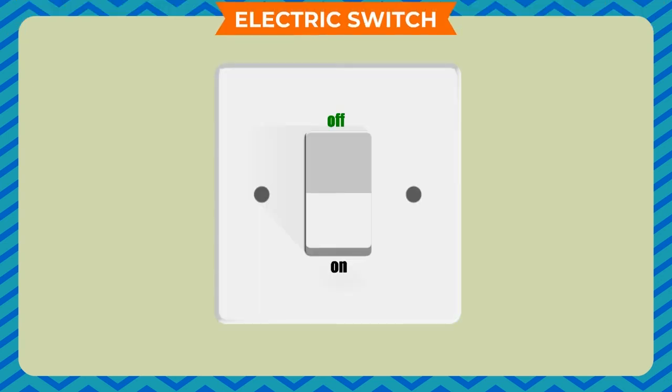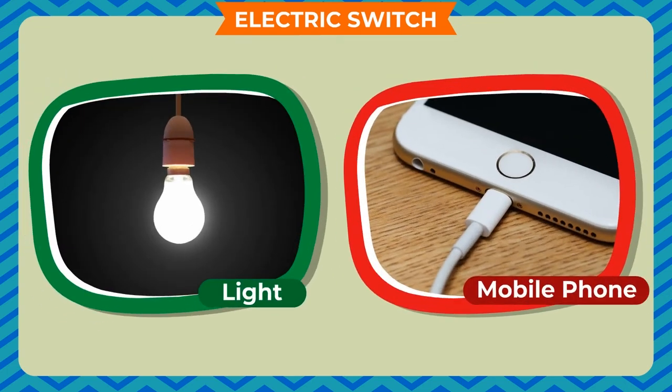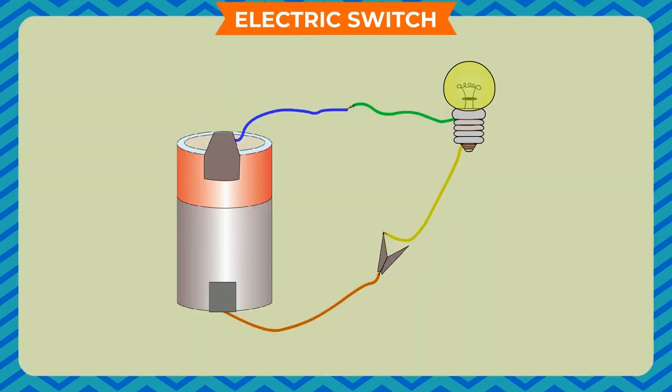Electric Switch. You usually switch on and off TV, fan, light, and mobile phone charging from a switch provided on the electric board. From the activity done, we get to know that the bulb lights up continually when the circuit is complete. But if you want to turn off the bulb, you have to break off the circuit. That means you have to use an electric component that temporarily breaks off and connects the circuit. This component is called an electric switch.